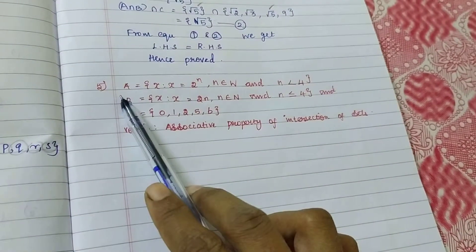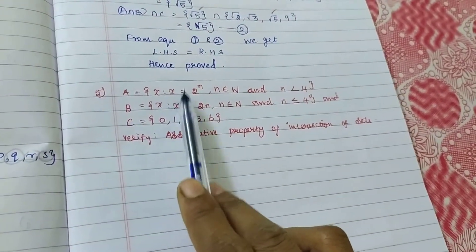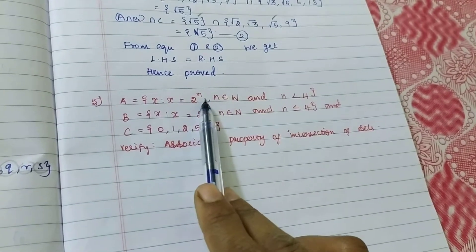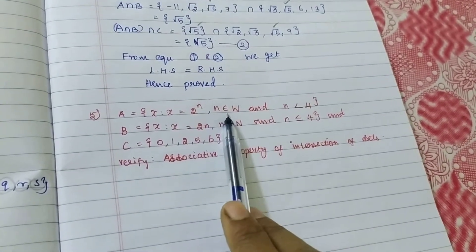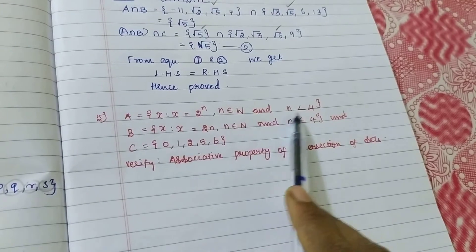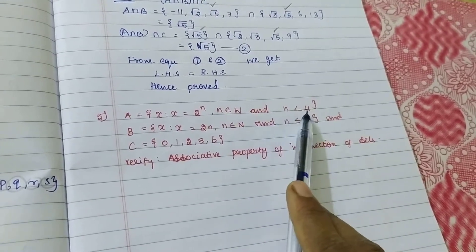Fifth sum, directly given, A equals X such that X equals 2 power N. N in a whole number means 0, 1, 2, 3. N is less than 4.